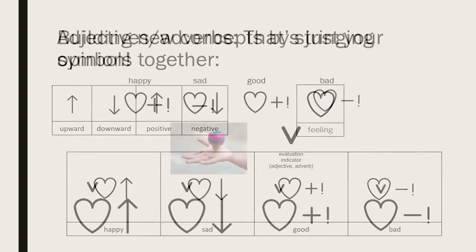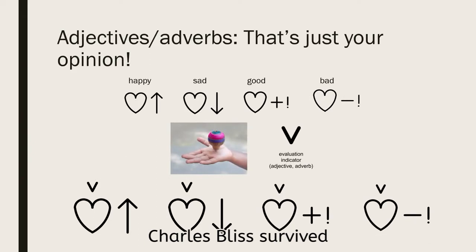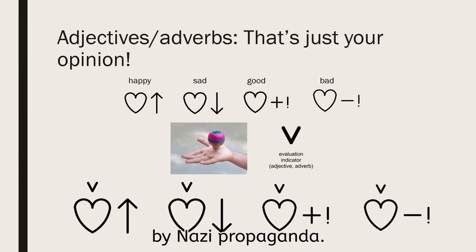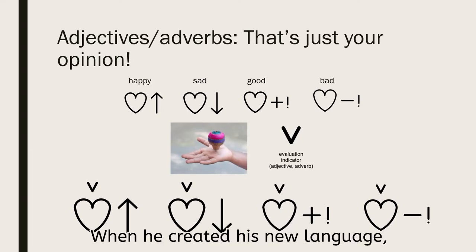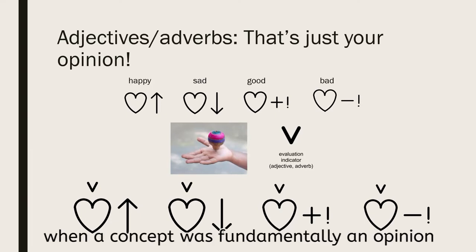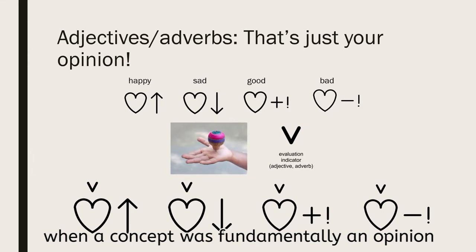Charles Bliss survived the concentration camps of World War II and was deeply affected by Nazi propaganda. When he created his new language, he wanted the language to clearly indicate when a concept was fundamentally an opinion rather than a fact. An adjective or adverb could lean either way depending on your point of view. He put an unstable angle shape over these kinds of concepts.